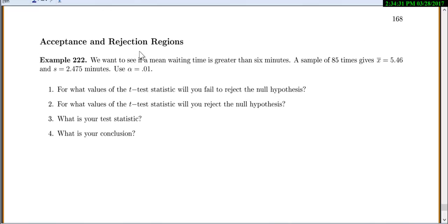For our next problem, we're going to practice acceptance and rejection regions. So we usually just do this once or twice, just so you can use it in another class if you ever need to. But usually we kind of prefer the p-value method. In this example, we want to see if a mean waiting time is greater than 6 minutes. So we're looking for is mu greater than 6.